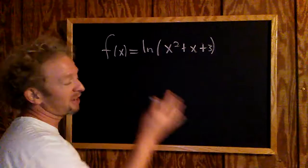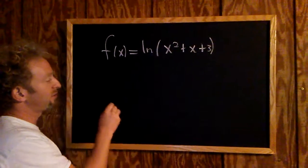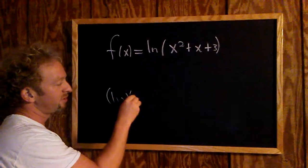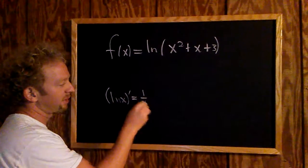So first of all, you have to know what the derivative of the natural log of x is. So if you take the derivative of the natural log of x, you just get 1 over x. Okay.